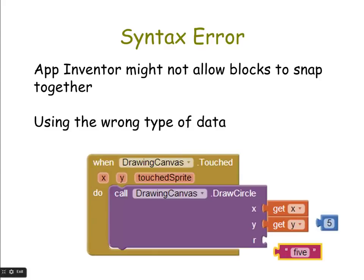Here's another example of a syntax error. You might have tried to snap two blocks together in App Inventor and it wouldn't allow you — that usually means you have the wrong type of data. In the canvas touched event from the Paint Pot app, the draw circle procedure has a parameter 'r' for radius. If you tried to put a text block in there, it would not snap in, because the radius parameter is expecting a numeric value. It cannot take a text value of '5' and convert it to a number, so it won't allow you to snap it together.